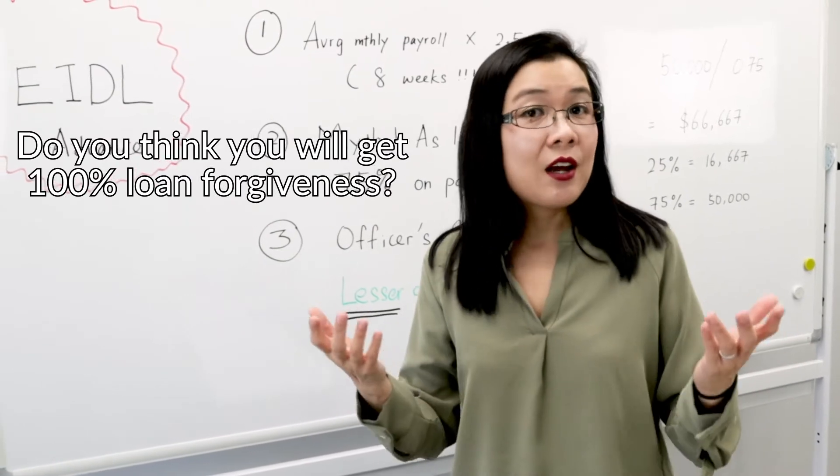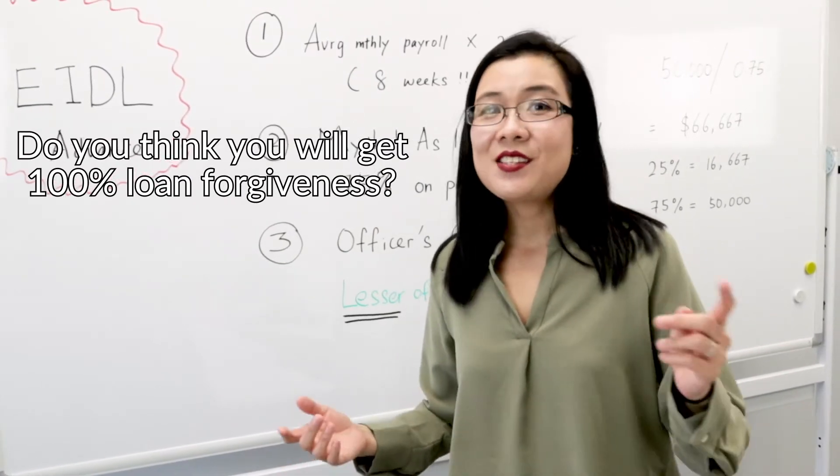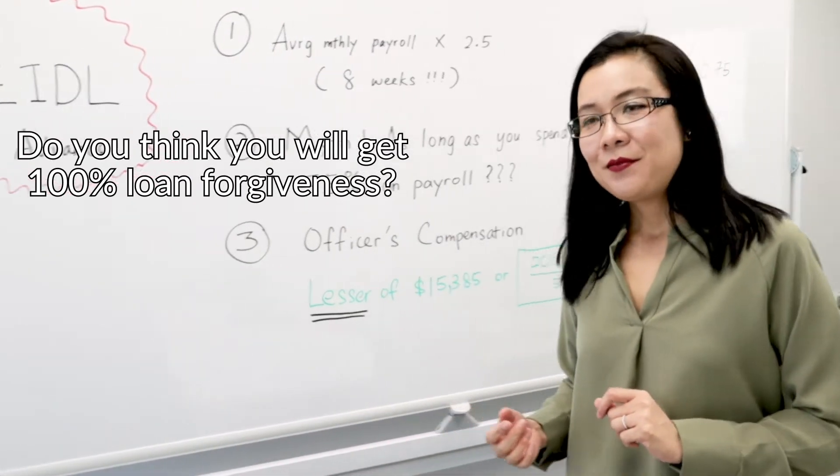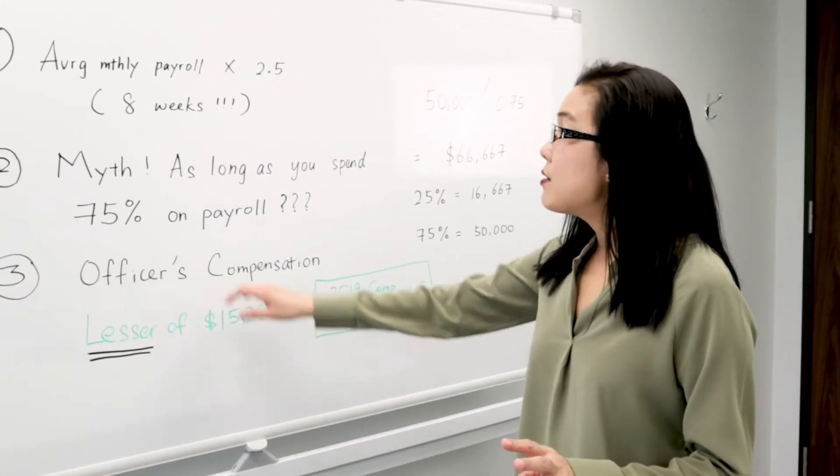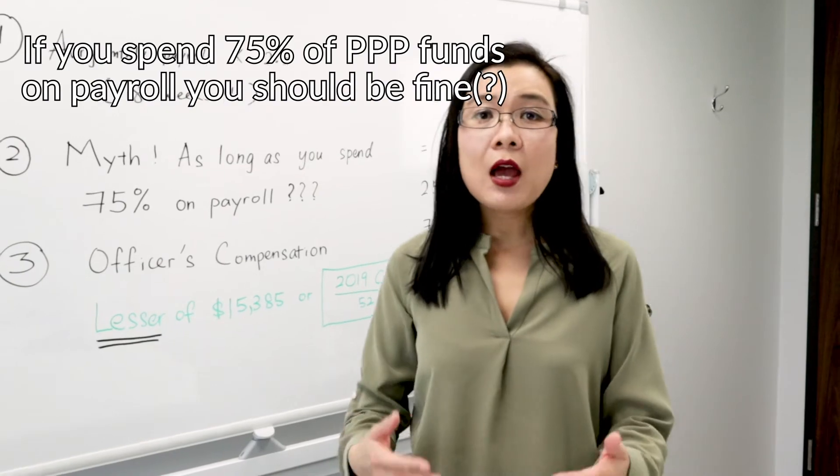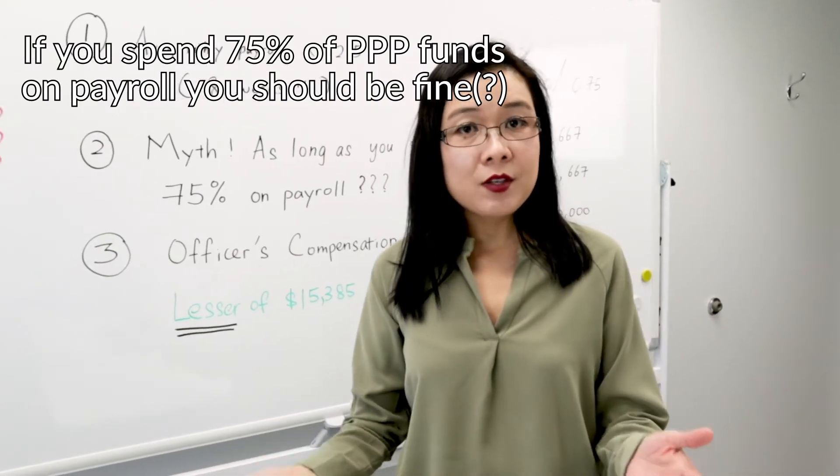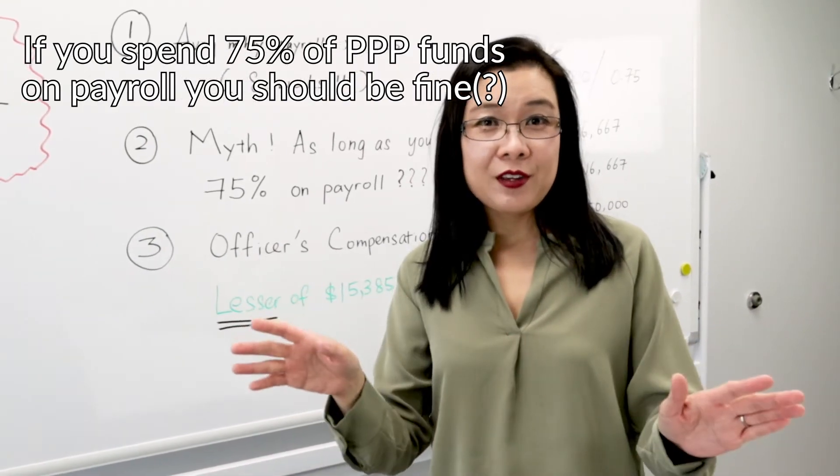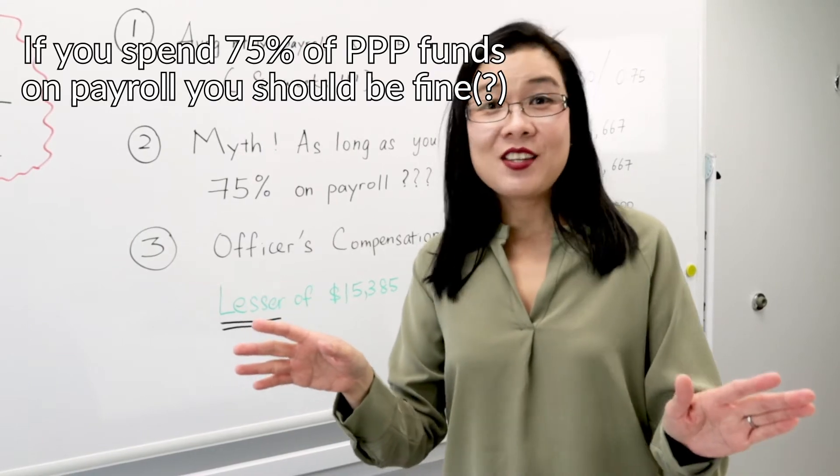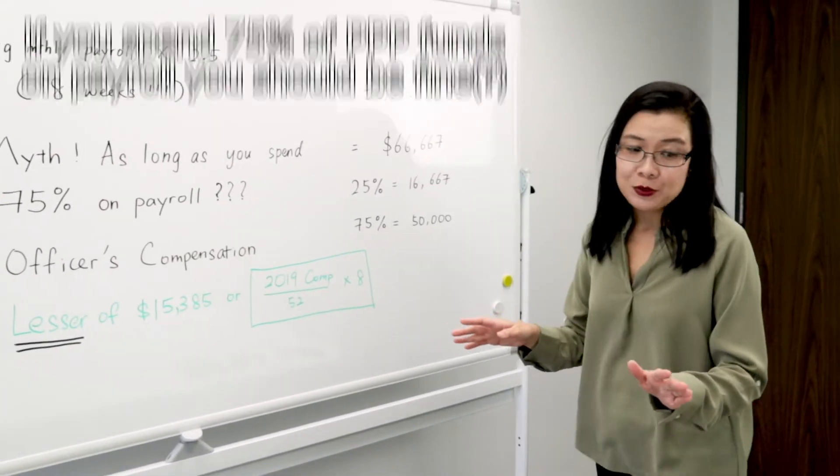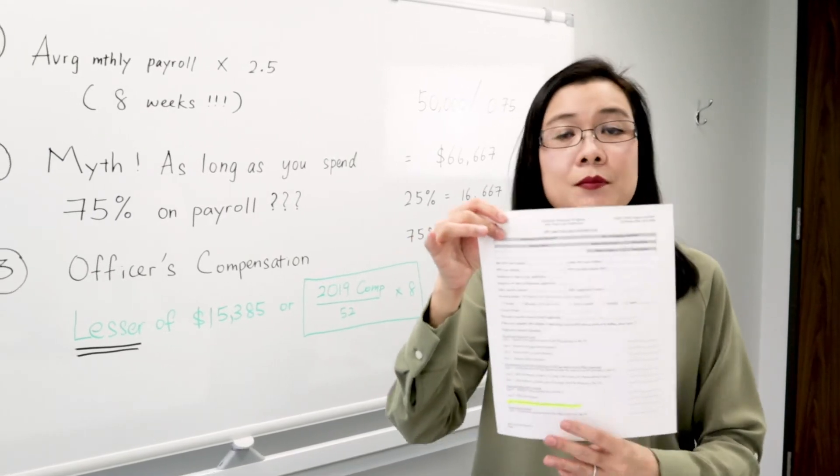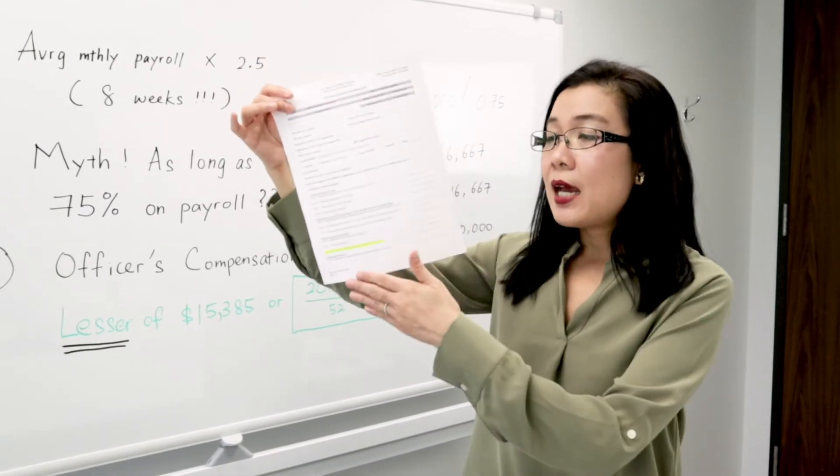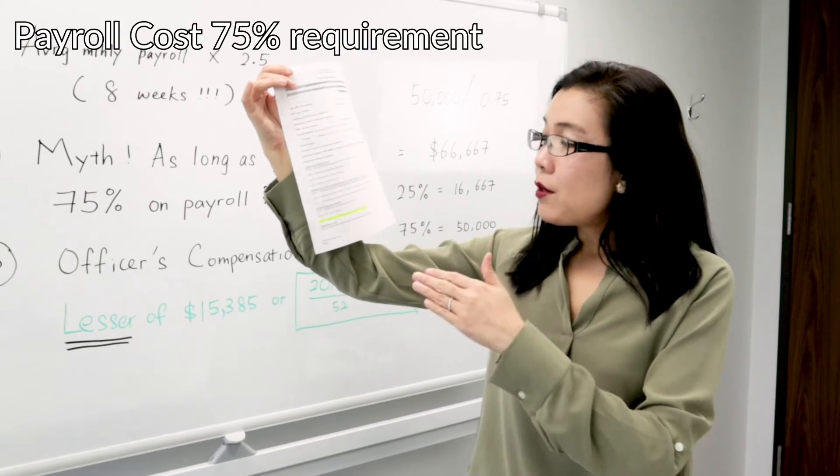Logically, do you think you will get 100% forgiveness? That is up to you to decide. The second confusion for many business owners is that as long as you spend 75% of the PPP funds on payroll, you should be fine for 100% forgiveness. Is that really the case? Let me show you. On May 15, there's a new form and you have to study the new form page 3, line number 10. It is called the payroll cost 75% requirement.